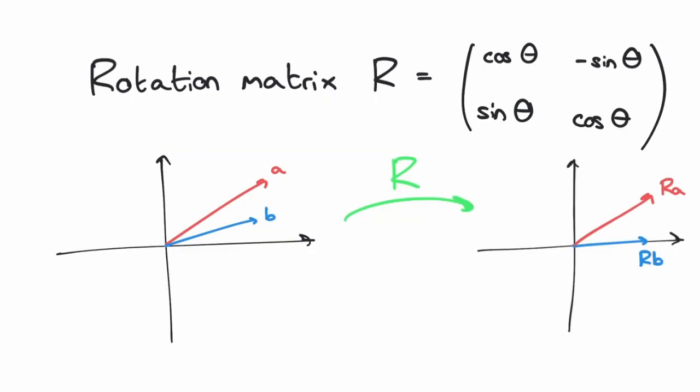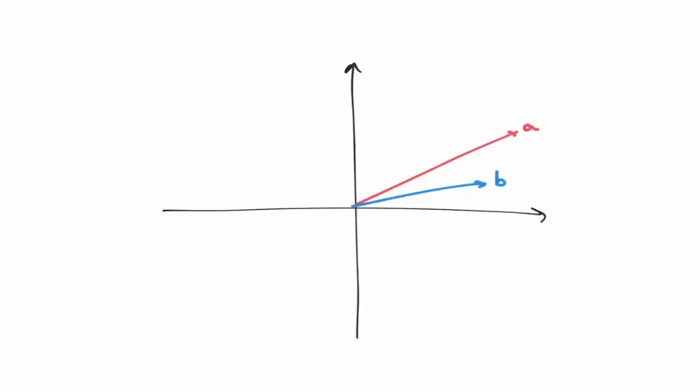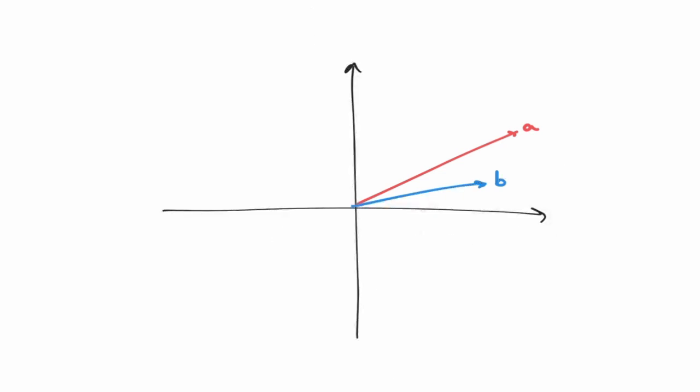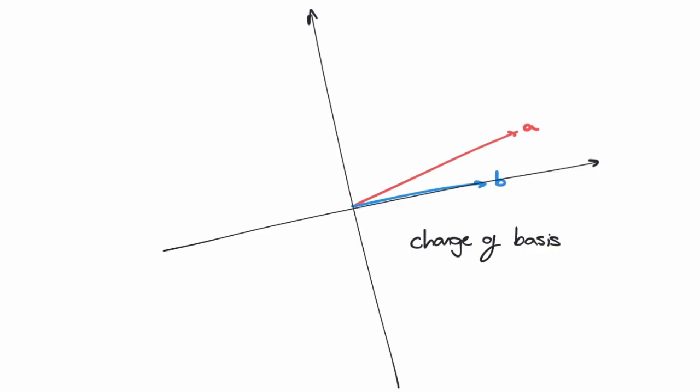To solve this problem, we used a rotation matrix, which is an example of a linear transformation. Instead of saying we rotated the vectors, you could also say we made the problem easier by changing bases. Thinking of it this way, we didn't change the vectors A and B, we instead changed the axes by which we measured A and B by rotating them, such that B was on one of the axes. But more on that another time.